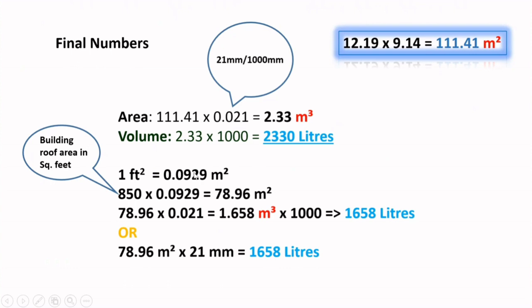In our day-to-day language, we are generally familiar with square feet. One square feet is equal to 0.0929 square meter. So let's consider 850 square feet as a roof area and multiply with 0.0929. We'll get 78.96 meters square. Multiply that with the rainfall, we'll get 1.658 meter cube. If you want to convert to liters, multiply with 1000, so this is the number of liters.